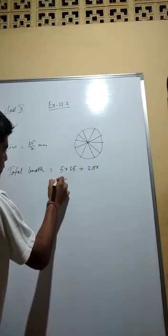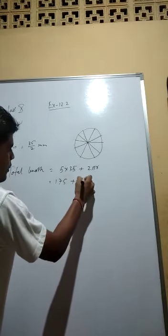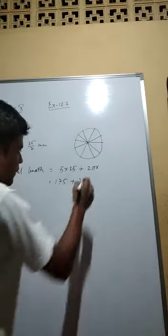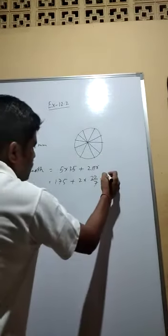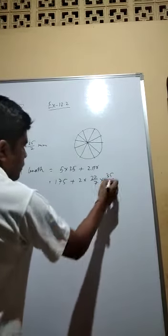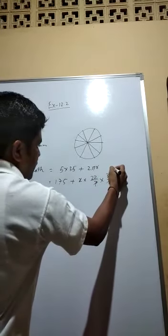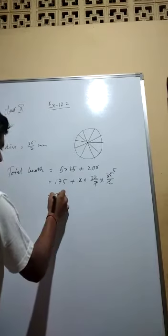So 175 plus 2, pi is given in the question. It is not given, so every time we use this 22 by 7. R is what? 35 by 2. 2 gets cancelled, which is 5. So 1, 7, 5 plus 10, 11. That would be 5.